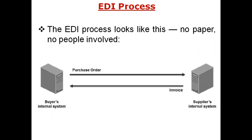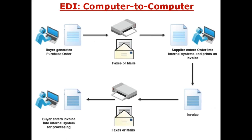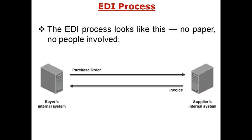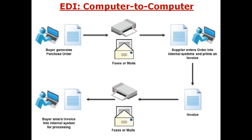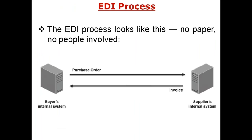The EDI process looks like this: no paper, no people. In the previous approach, paper was used — invoices were sent on paper and humans were involved. But in the EDI process, there is no paper and no people involved. The buyer internally defines the purchase order, and the supplier, through their internal system, sends the material along with the invoice billing to the buyer, who confirms receipt of the ordered quantity.